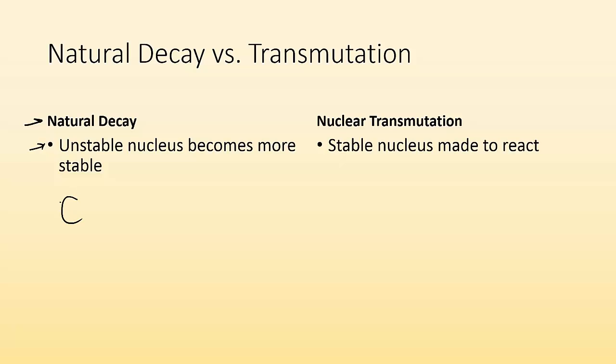So we can have carbon-14 and it can be given off a beta particle and then become a nitrogen-14, right? This was already unstable initially. So that's the difference.